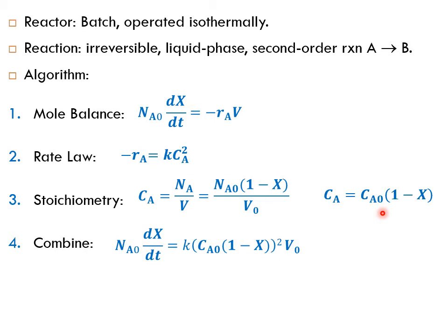Then comes the combine step. In the combine step, we're going to combine all of the equations above into one equation. So we're going to substitute for CA using this equation. So for -rA, we will have k times CA squared. This is CA. So we got CA0(1 - X), and it is squared. And then V equals V0, and we have here NA0. So we got all of this in the combine step.